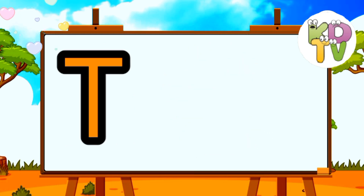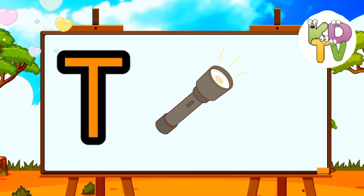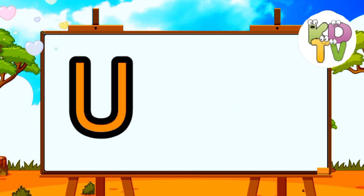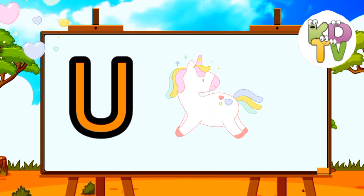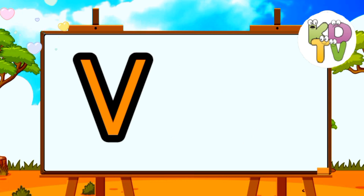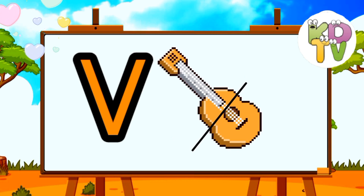T is for Torch. U is for Unicorn. V is for Violin.